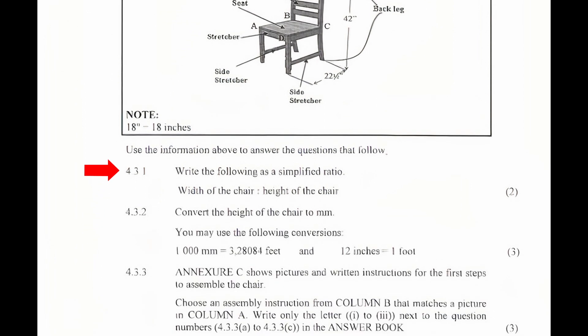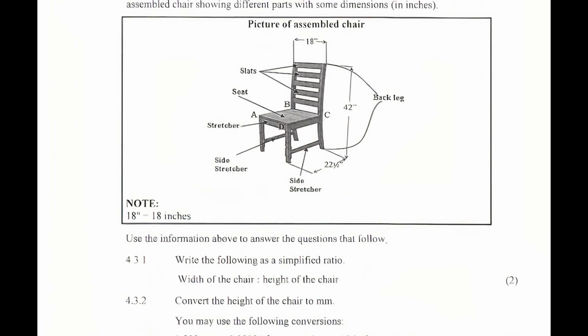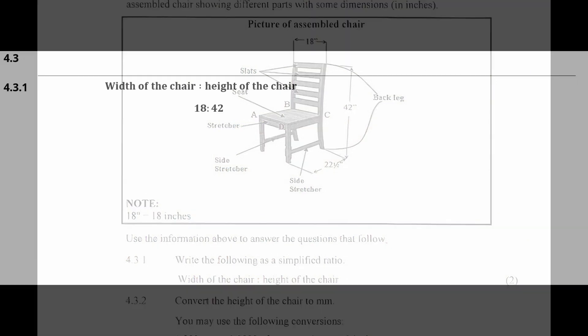4.3.1. Write the following as a simplified ratio: the width of the chair to the height of the chair. From the picture, we see that the width of the chair is 18 inches and the height of the chair is 42 inches. As a ratio, this is written as 18 to 42.